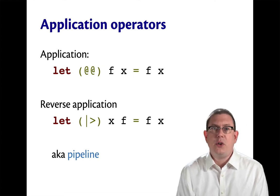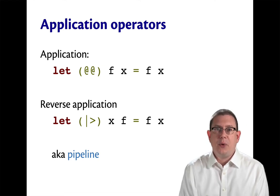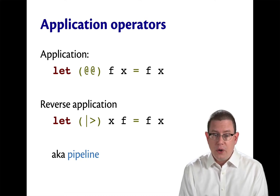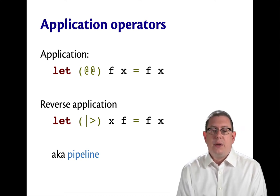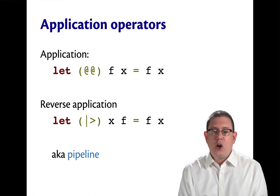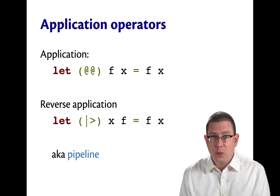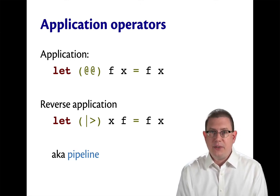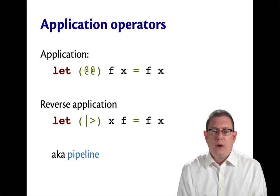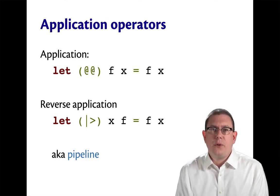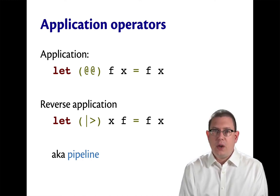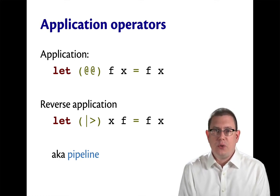This is so simple it might seem like you don't even need it — we'll see an example in just a second as to how it can be useful. The reverse application operator, also called the pipeline operator, does the opposite. It takes in an argument x and then a function f, in the reverse order from the first, and applies f to x. Reverse application is written with vertical bar greater than, which is meant to look like a right-facing triangle, the notion being that you're running something through a pipeline from left to right.